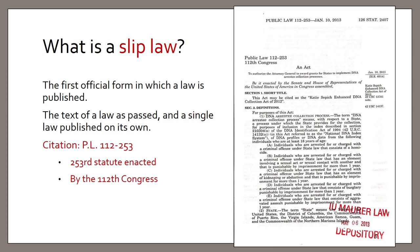When a bill is enacted into law, it's assigned a unique public law number. Although the format of public law numbers varies in different jurisdictions, it's pretty common for the number to indicate the year or session of the legislature as well as the sequential number of the law itself. For example, a federal public law number consists of two numbers separated by a hyphen. The first number indicates the Congress in which the law was passed — in this instance, the 112th Congress — and the second number represents the numerical order in which the law was passed during that Congress. This one is the 253rd law passed by the 112th Congress.